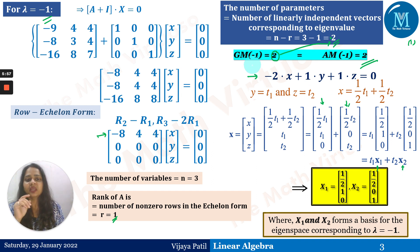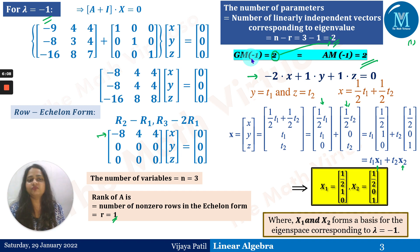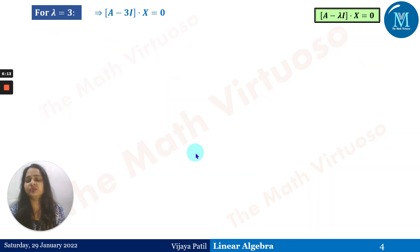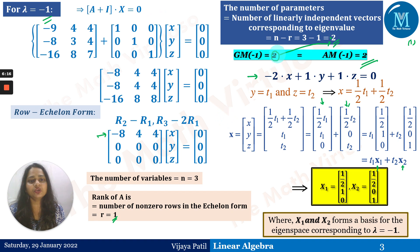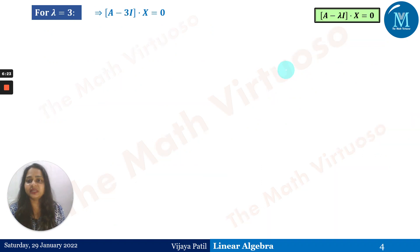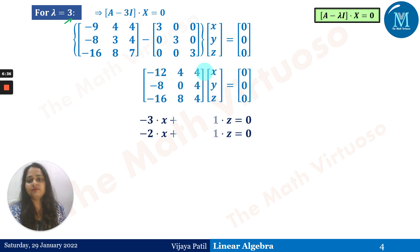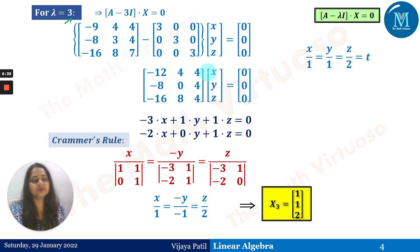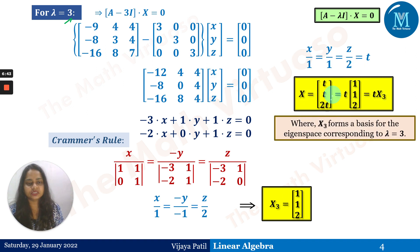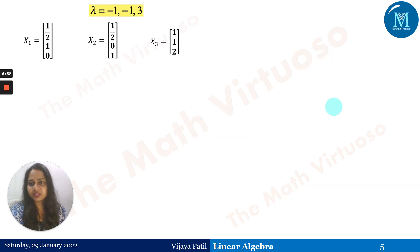Since AM(−1) = GM(−1), diagonalization is confirmed. It is now wise to find the eigenvector for λ = 3. If they had not been equal, it would not have been necessary. Since diagonalization is possible, we proceed — using Cramer's rule for this distinct eigenvalue — and we get X₃ = [1, 1, 2] as the basis vector for λ = 3.